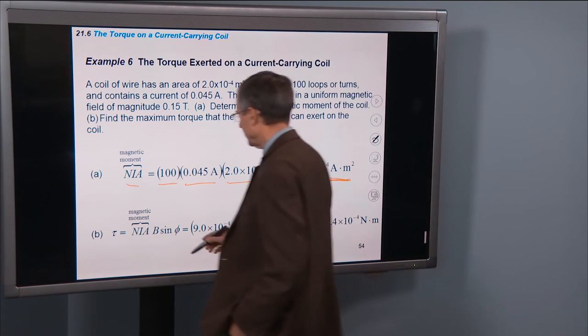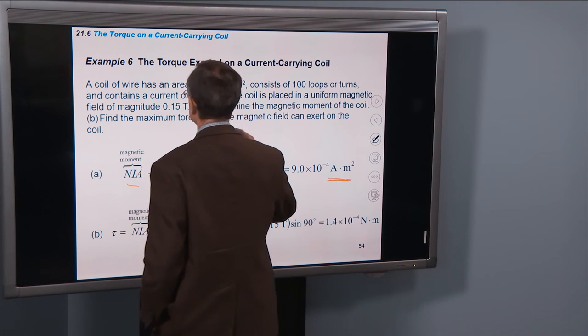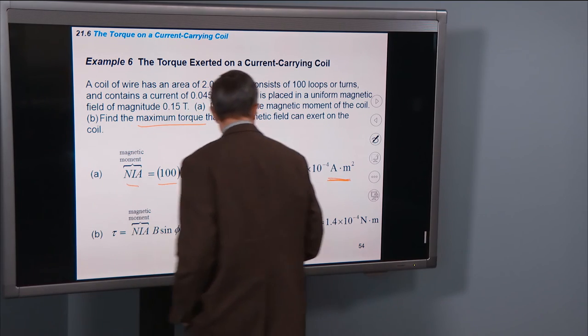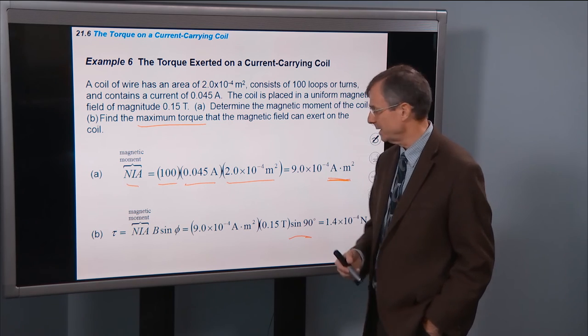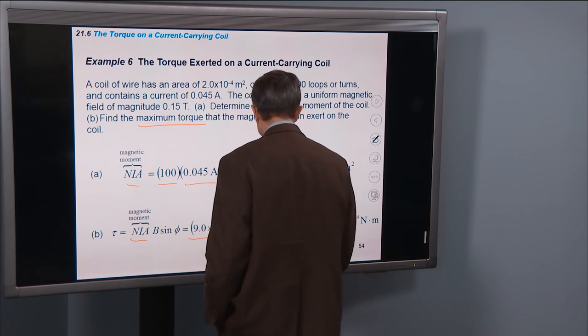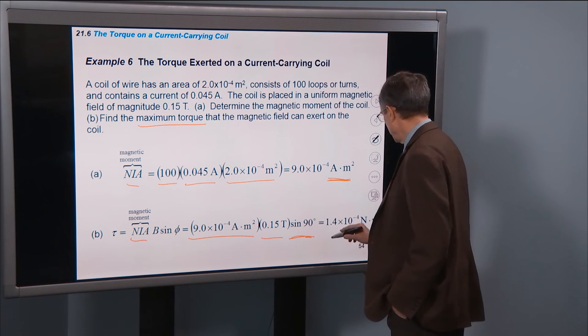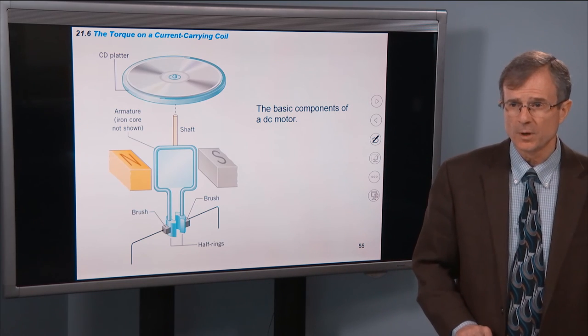And then the torque that the magnetic field exerts on it, well in fact it's the maximum torque. And the maximum torque we'll get is in the case where that angle Φ is 90 degrees. So the magnetic moment we just calculated, times the field times the sine of 90, sine of 90 is 1, and that gives a torque of 1.4 times 10 to the minus 4 newton meters.